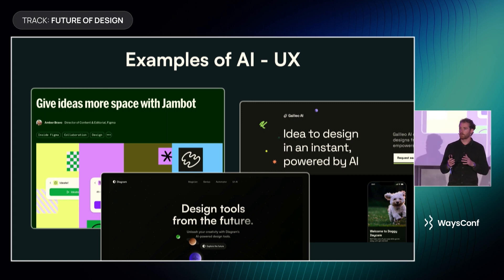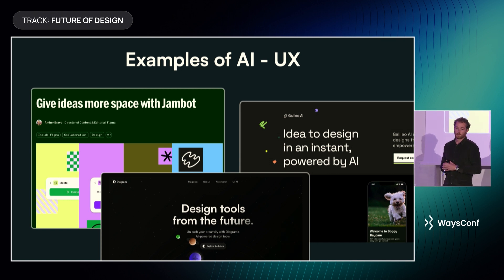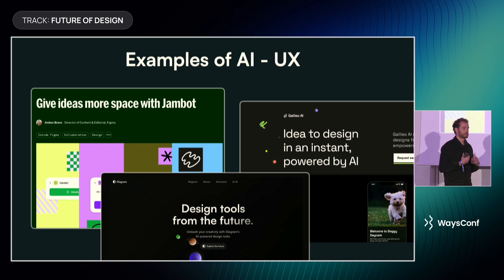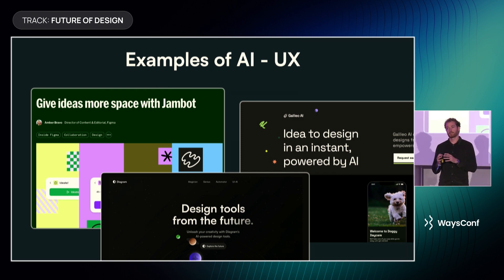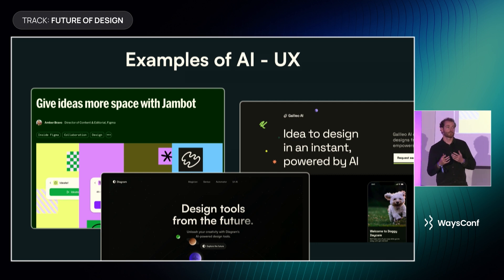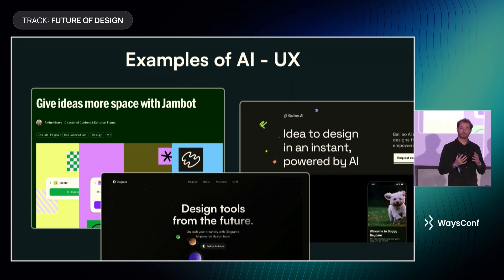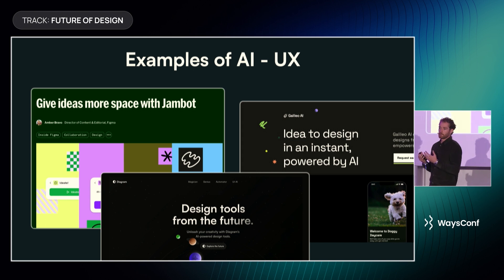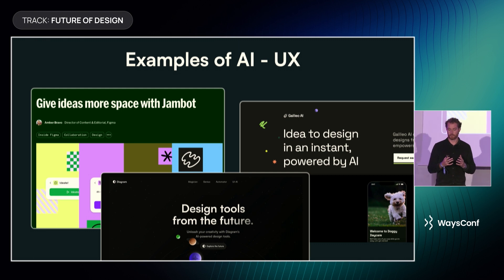In the middle, we have Diagram, which some of you may have heard of — it was recently acquired by Figma. The Diagram team is developing Figma plugins to automate the tedious parts of our work, things like naming layers or applying various styles. These tasks take up so much time and are very repetitive, and they want to automate them so people like us have more time for the extra hard and interesting work.